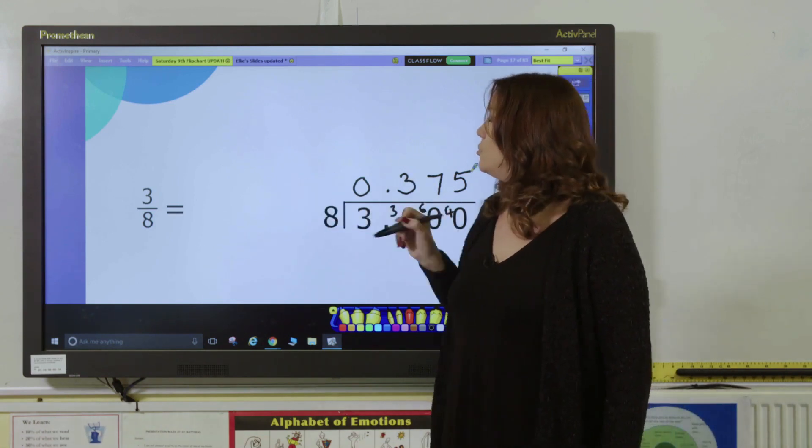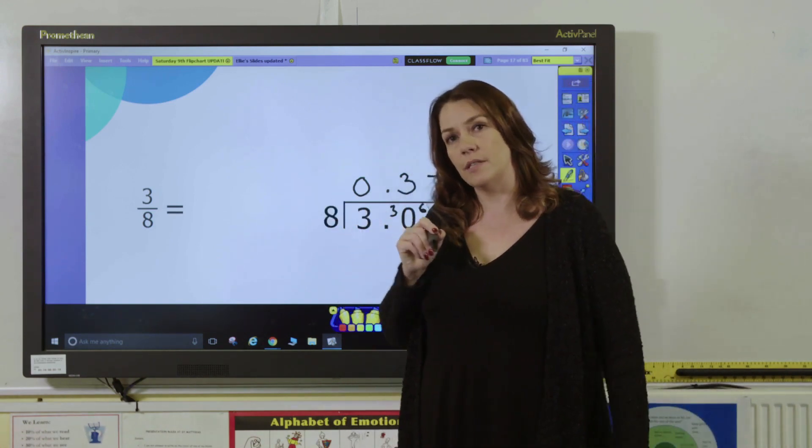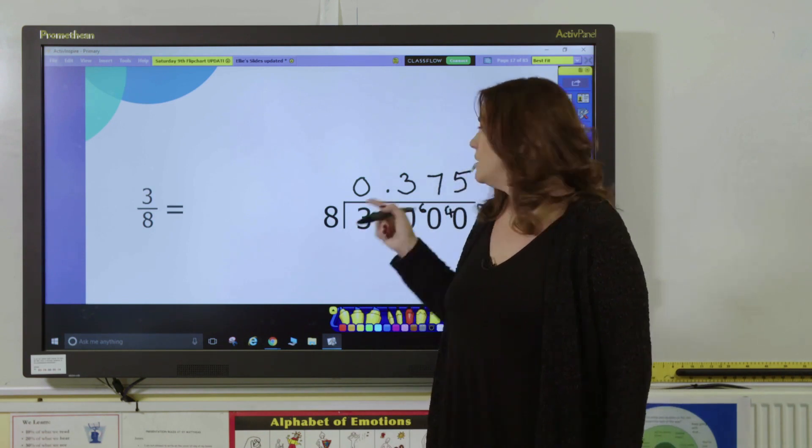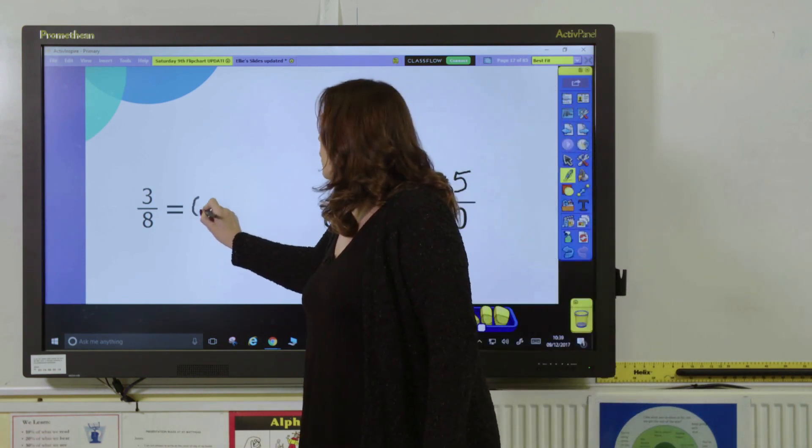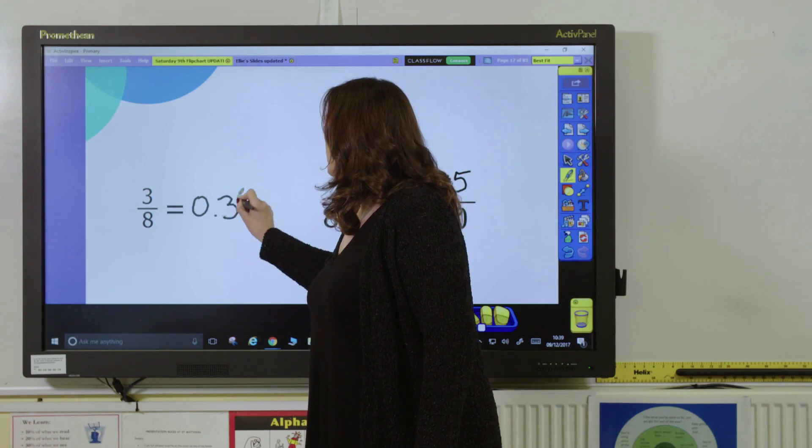So we can go back to our original fraction, 3/8. As a decimal, or 3 divided by 8, this gives us a decimal of 0.375.